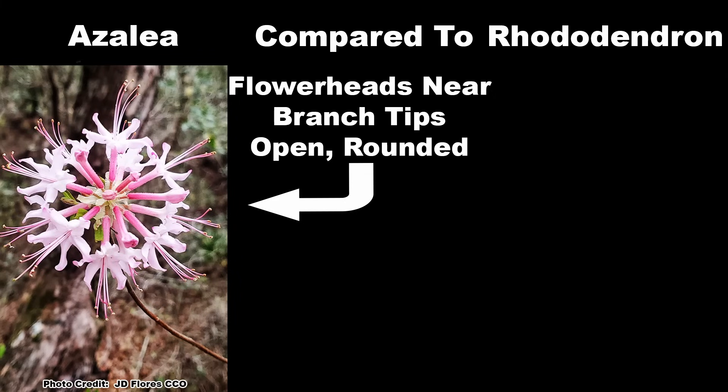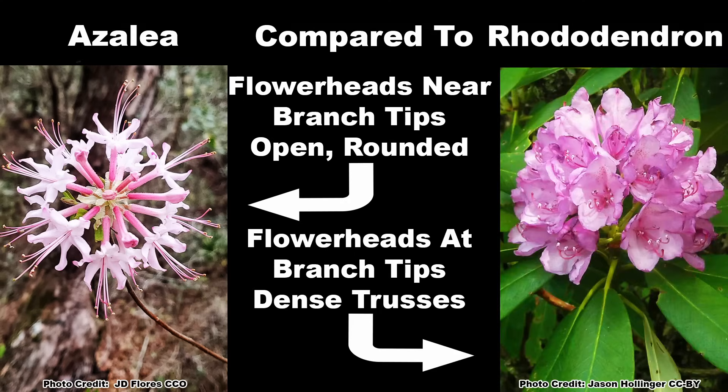Azalea flower heads may be scattered along the branch, although they are usually near the end of the branch and are open or ring-shaped. The rhododendrons have the flowers clustered tightly at the tips of the branches in dense flower heads known as trusses.